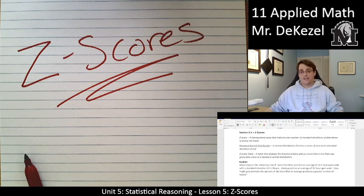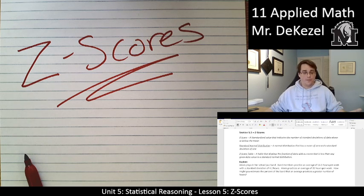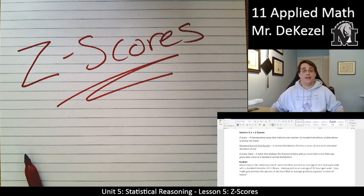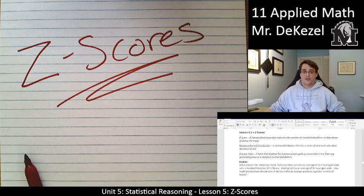A z-score always converts data into a standard normal distribution curve. Instead of writing actual means and standard deviations, it treats them all with a mean of zero and standard deviations from minus three to plus three. Very rarely will you get a z-score smaller than minus three or larger than plus three — if you're getting something like 10, you'll need to double-check your work. We'll also work with a z-score table, but I think all of this will make more sense if we just start with an example.